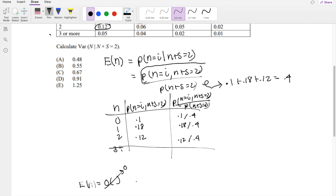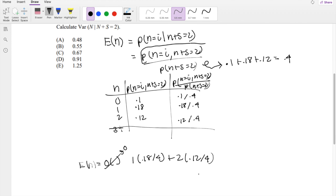But the next one is 1 times 0.18 over 0.4, plus 2 times 0.12 over 0.4.